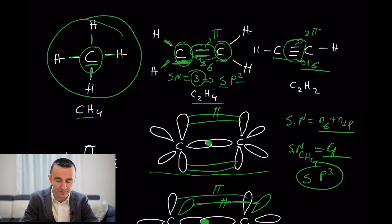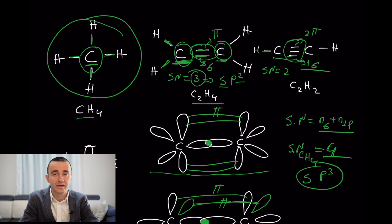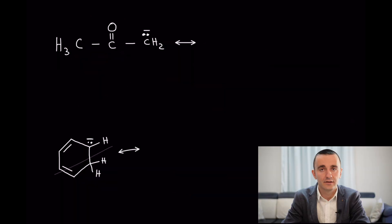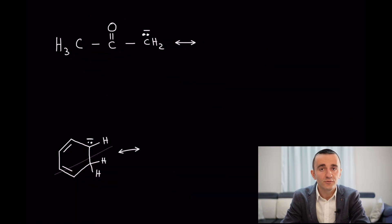In the triple bond, the carbon has a steric number of two — only one sigma bond to hydrogen and one sigma bond in the triple bond are counted. This gives sp hybridization. Both carbons in the triple bond are equivalent, so both are sp hybridized. Let's move now to resonance structures.